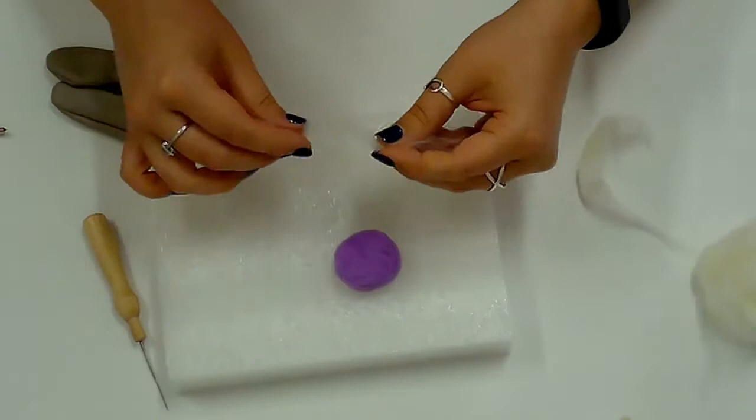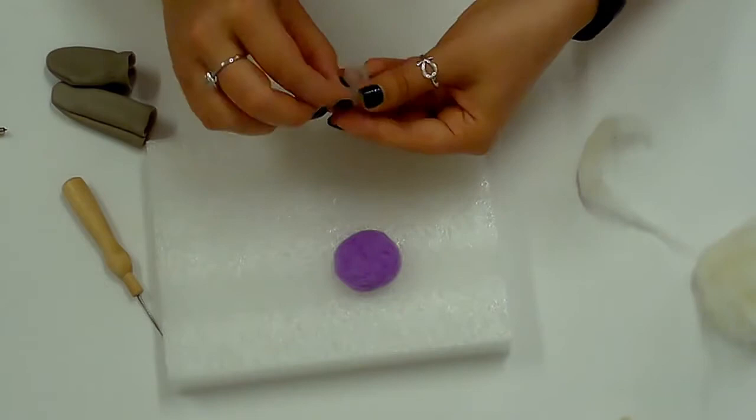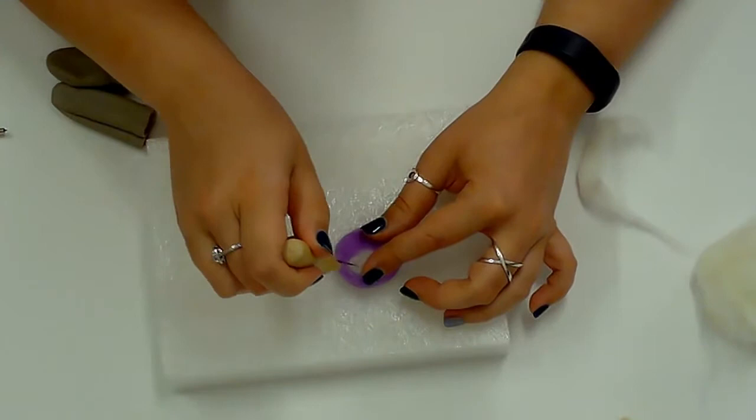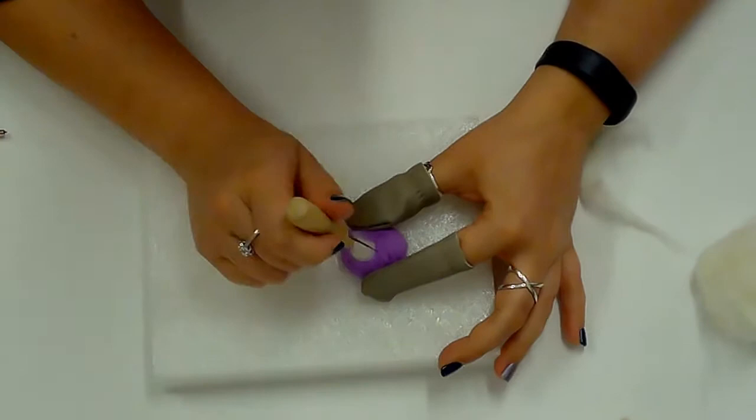To make spots on the mushroom, separate a small piece of wool, roll it into a ball, and carefully poke it into the top. Remember to wear your finger protectors.